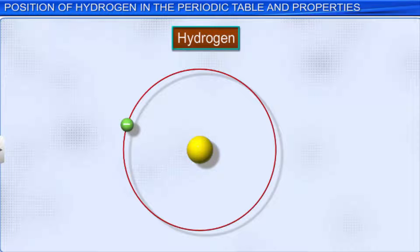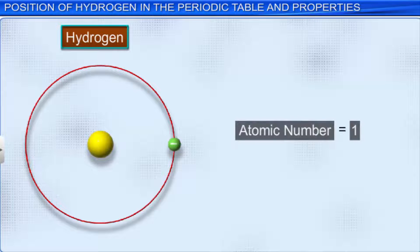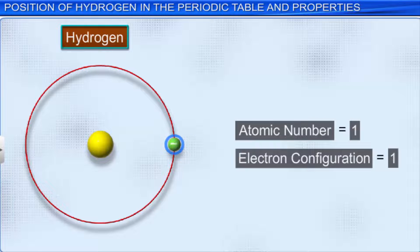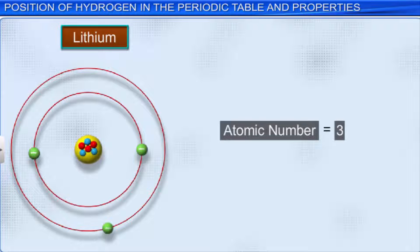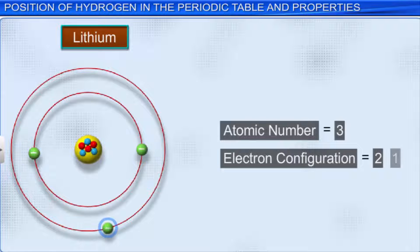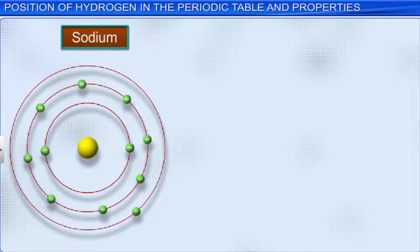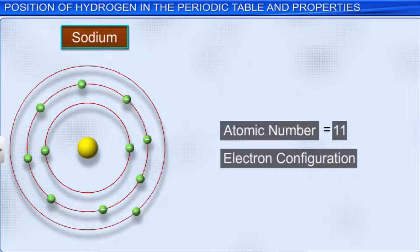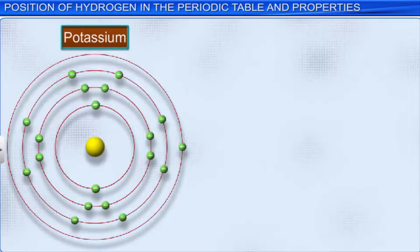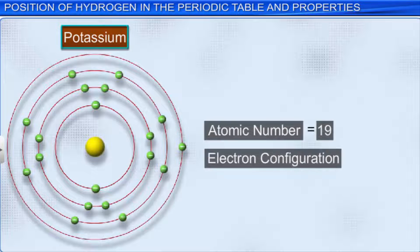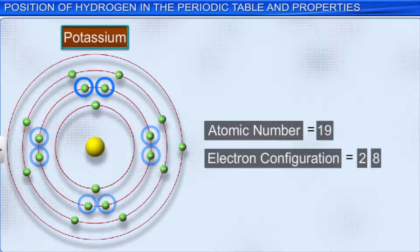Now let's see the similarities between hydrogen and alkali metals. Electronic Configuration: Like hydrogen, alkali metal elements have only one electron in their outermost orbits. For example, hydrogen with atomic number 1 has the electron configuration of 1. Lithium with atomic number 3 has the electron configuration of 2, 1. Sodium with atomic number 11 has the electron configuration of 2, 8, 1. Potassium with atomic number 19 has the electron configuration of 2, 8, 8, 1.